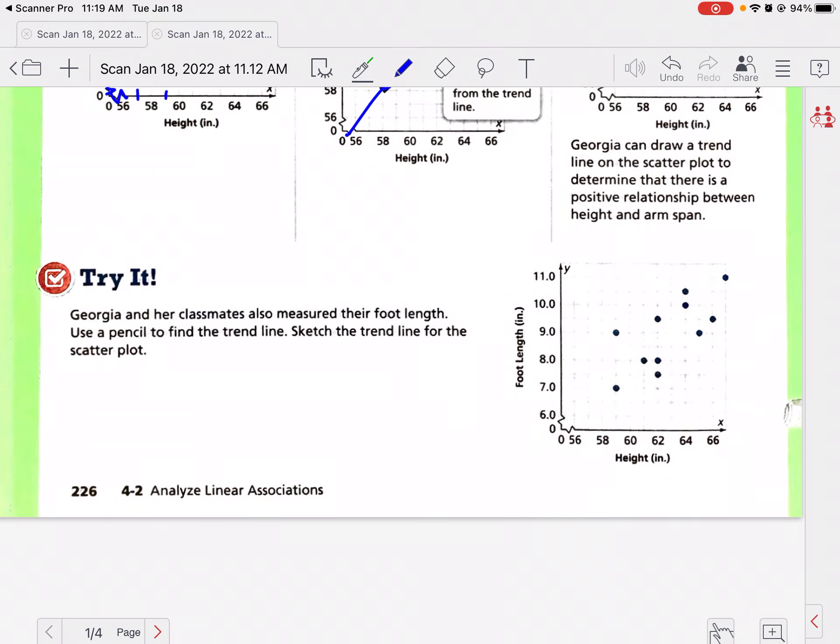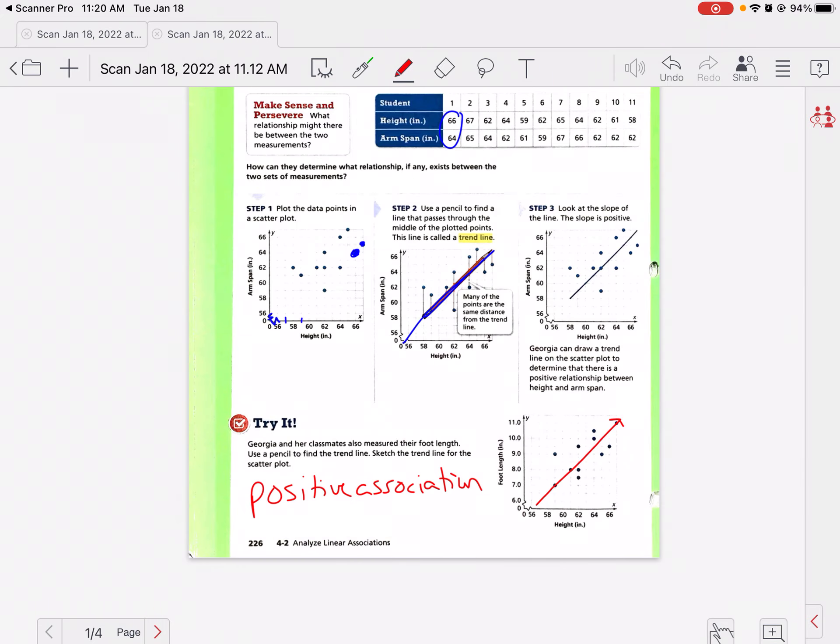So Georgia and her classmates also measure their foot length. Use a pencil to draw a trend line and sketch the trend line for the scatter plot, and then let's do the association as well. I'm looking at this data and we can see a general trend upwards. Again, your line isn't going to hit every dot because the data is kind of a little more all over the place. So this would be a positive association.